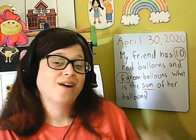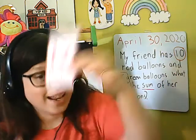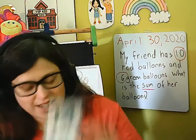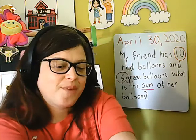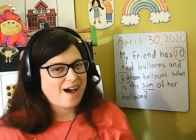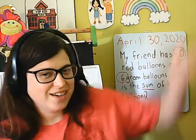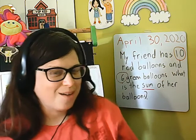Also, keep working on those teen numbers. Remember, twelve is two and ten, thirteen is three and ten, fourteen is four and ten, and so on. That will help you with the teen numbers as well. The base ten blocks and everything we've learned will help us be really good when it comes to working with teen numbers.